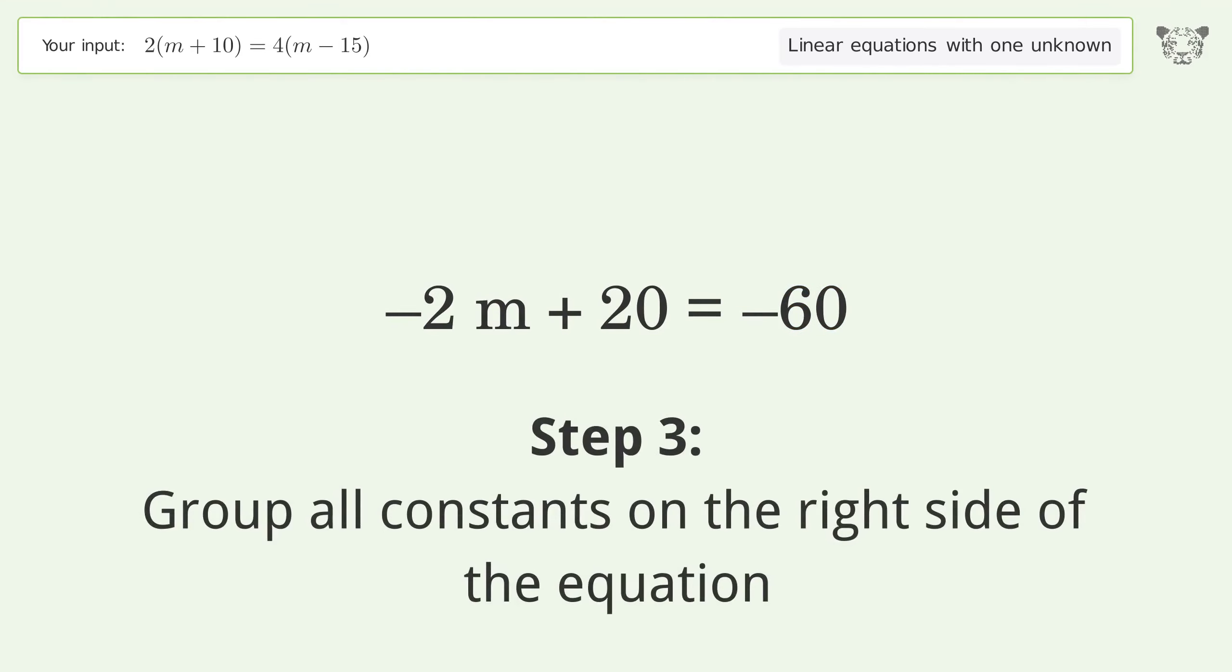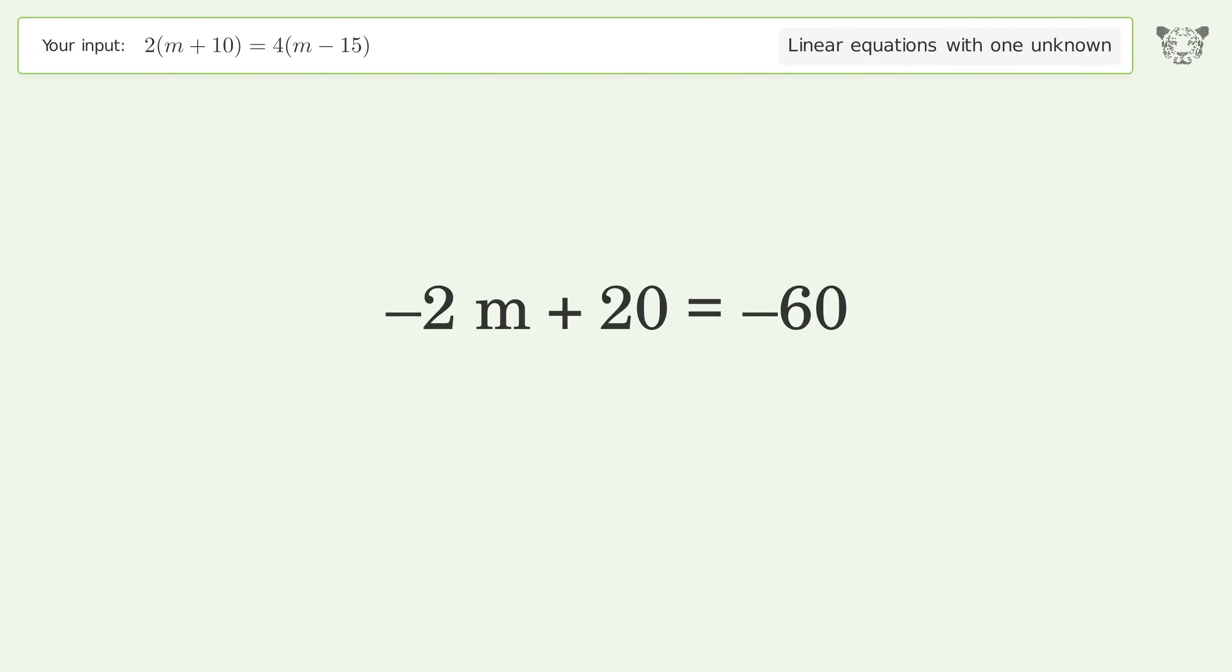Group all constants on the right side of the equation. Subtract 20 from both sides. Simplify the arithmetic.